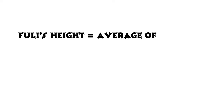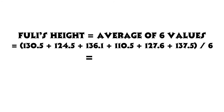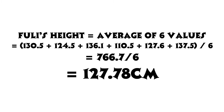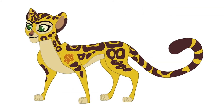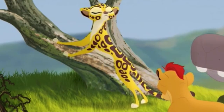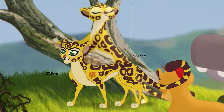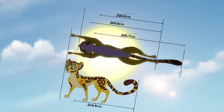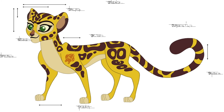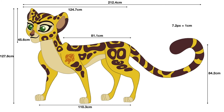In conclusion, taking the average from these six values gives a safe and reasonable average for Fuli's height. The final value we can safely assume is 127.78cm. This is quite a bit larger than the 95.4cm calculated last time. Looking at Fuli's dimensions based on this height, she is quite a bit larger than what a cheetah of her age should be, with a large neck, head, and tail — further reinforcing that Fuli may be a 'super cheetah', or not really a cheetah at all. I mean, just look at her spots.